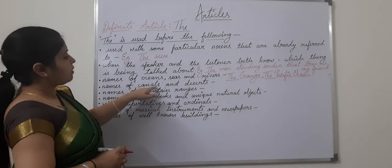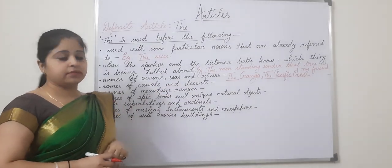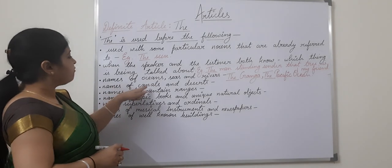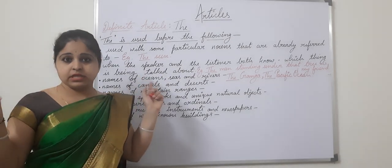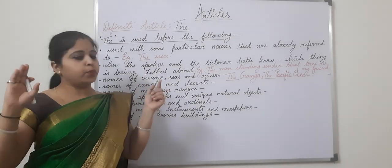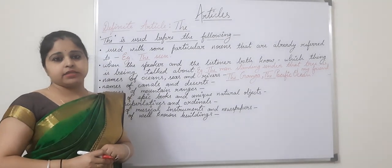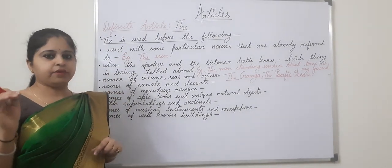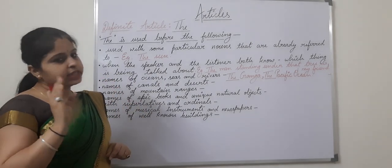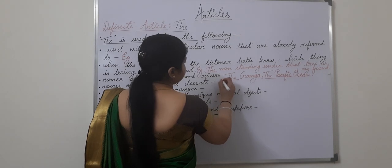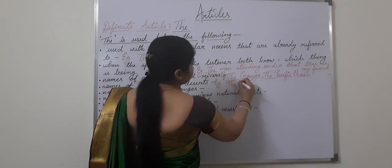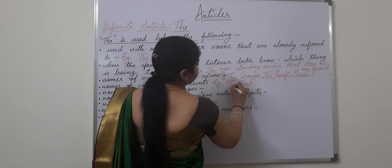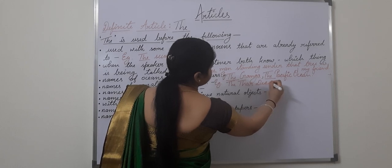Next: names of canals, small water bodies, and deserts — like the Sahara Desert and the Thar Desert. They are only one in the world and are very particular things, so we use 'the' before them also. The Thar Desert.